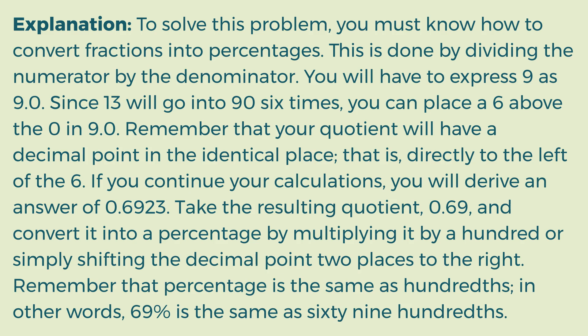If you continue your calculations, you will derive an answer of 0.6923. Take the resulting quotient, 0.69, and convert it into a percentage by multiplying it by a hundred, or simply shifting the decimal point two places to the right. However, once you derive that first 6, you should be able to select the correct answer choice. Remember that percentage is the same as hundredths; in other words, 69% is the same as 69 hundredths.